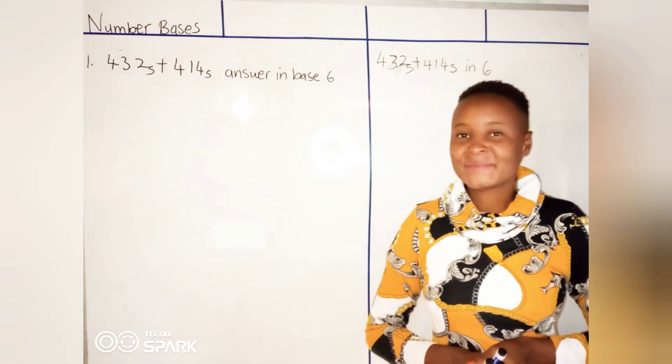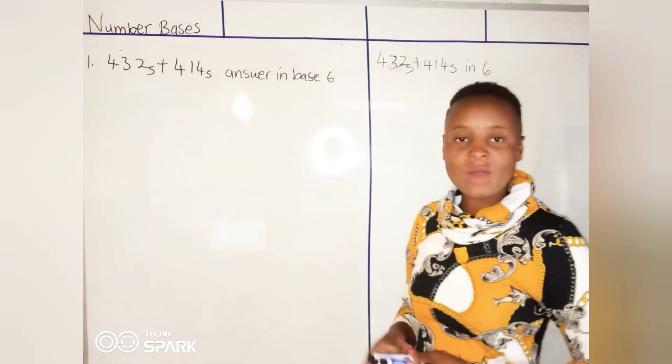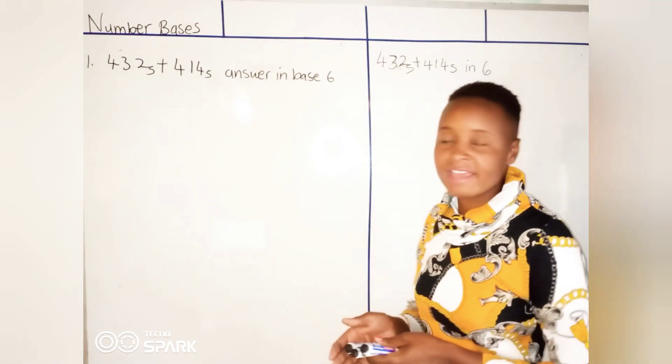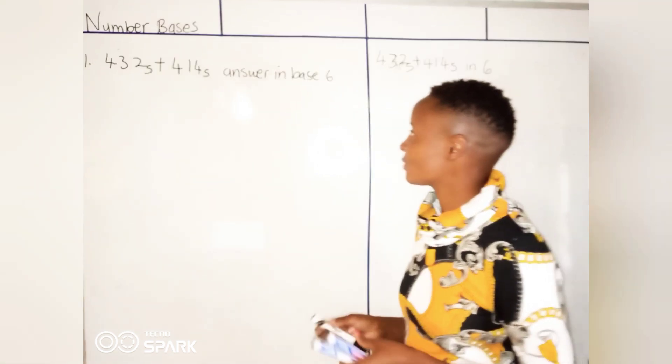So today we have 432 base 5 plus 414 base 5 and we must give our answer in base 6. So how are we going to solve this one?